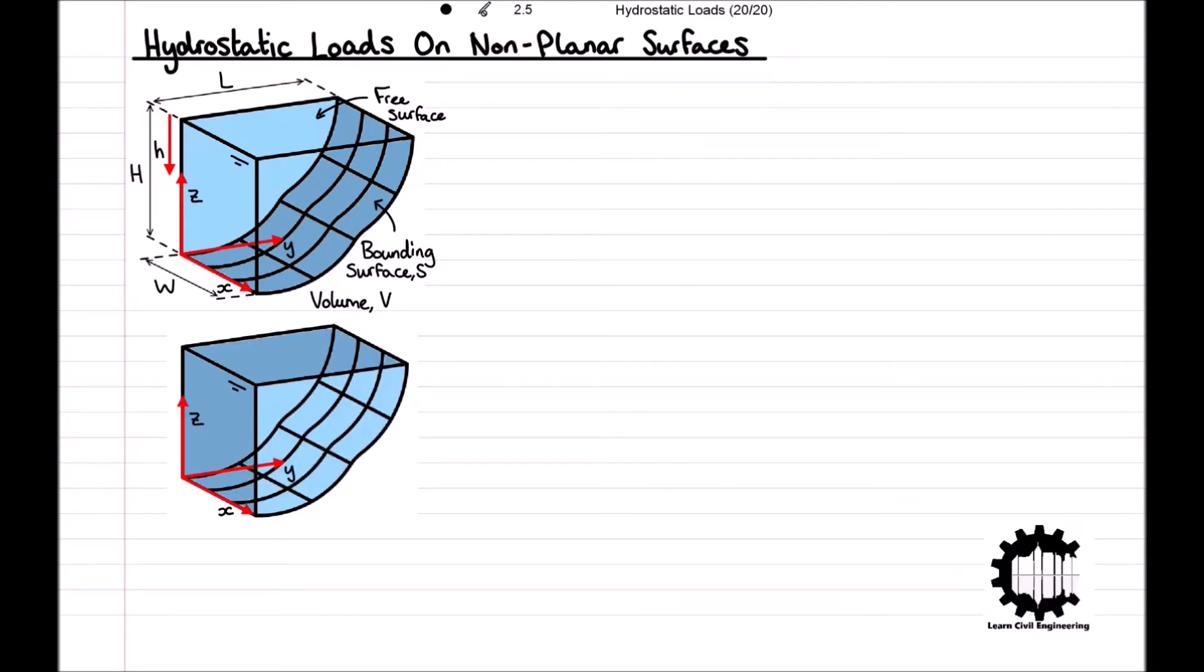The surface S can be projected onto a vertical plane of area which we will denote AV, where AV equals WH, and it can also be projected onto a horizontal plane of area on the liquid's free surface which we will denote AH, where AH equals WL.